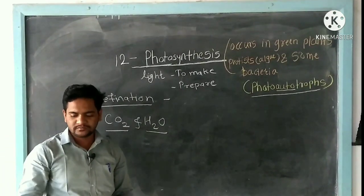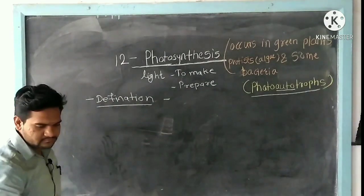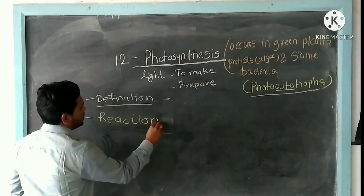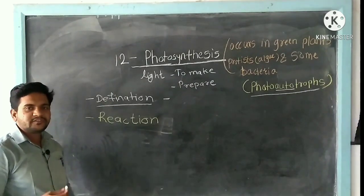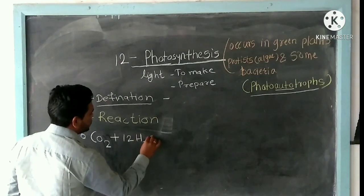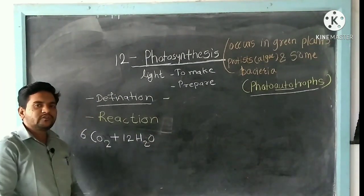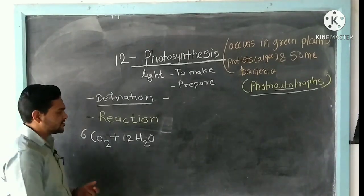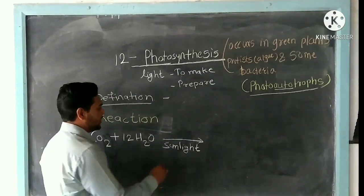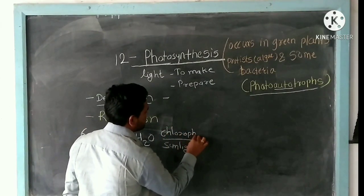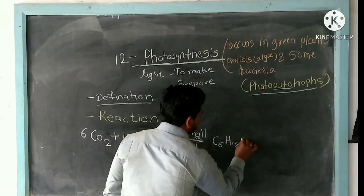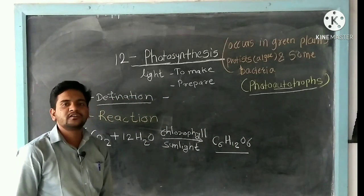Now the photosynthesis reaction: six CO2 molecules plus twelve H2O molecules, in the presence of sunlight and chlorophyll pigments, react to produce energy. The food produced by plants is C6H12O6, which is a glucose molecule.